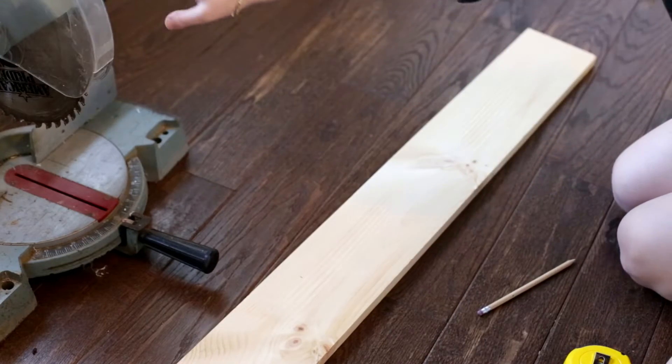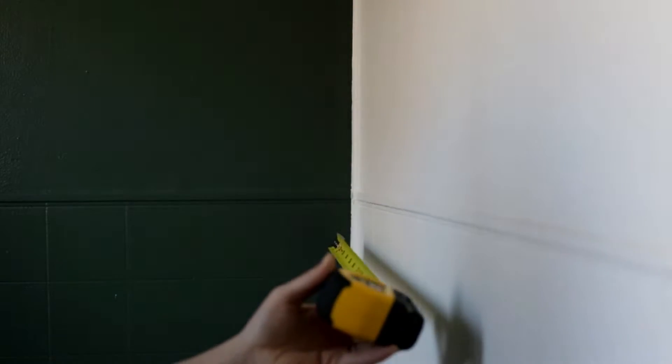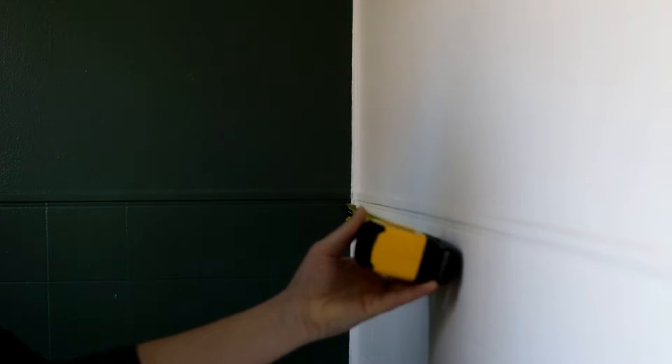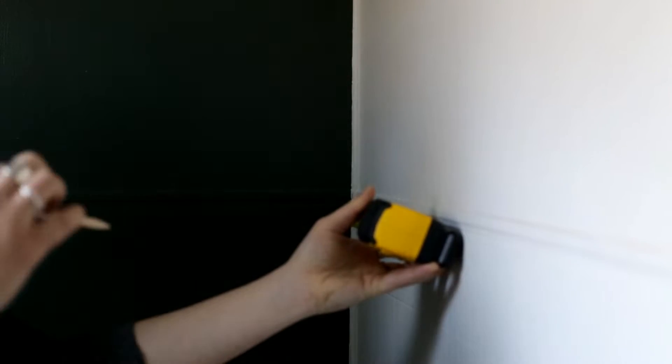Then you can use a miter saw to make your cuts. Next, you're going to measure and mark where you want to pre-drill your holes for your anchors, then pre-drill those holes and attach your corner braces.